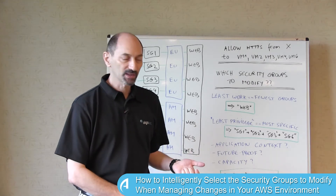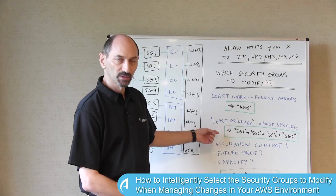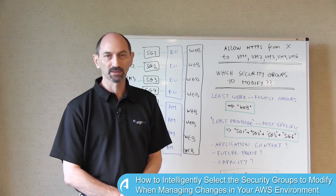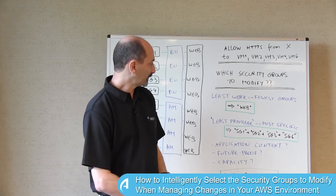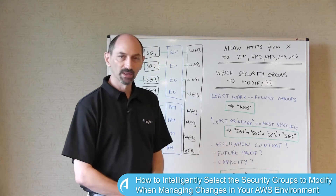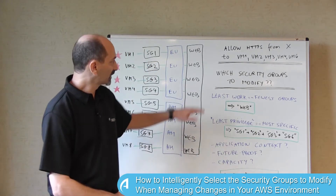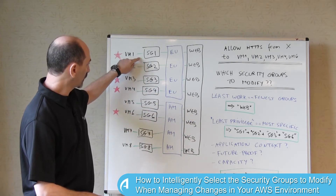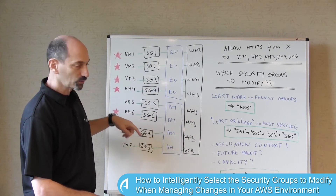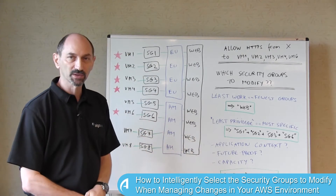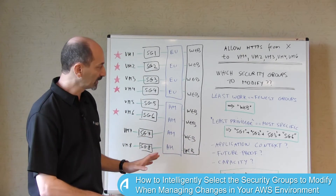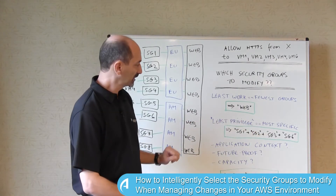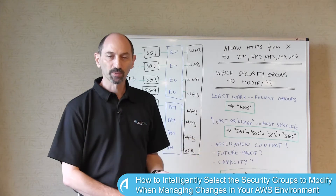The other direction is to use the principle of least privilege — allow the requested traffic to go only to the places it must reach and nowhere else. To do that, you can be very specific and add the rule to each of the individual security groups: security groups 1, 2, 3, 4, and 6. You write five separate rules on five separate security groups and get the job done. It's the most specific, so there are no side effects, which is good, but you work pretty hard to do all that.